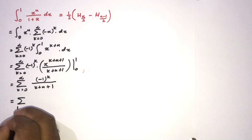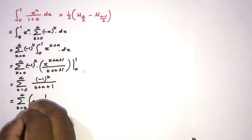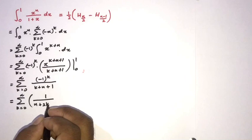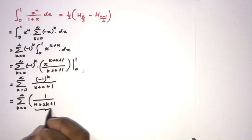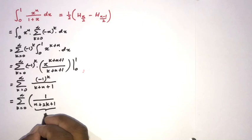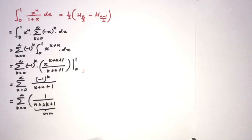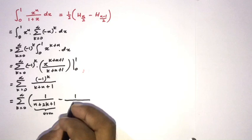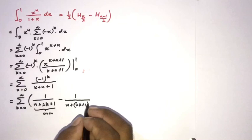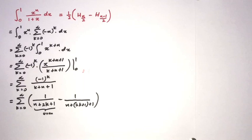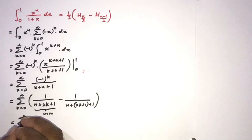Now I will rearrange this series. For k from 0 to infinity, I take 1 over (n plus 2k) times (n plus 2k plus 1). For even values of k, I write 1 over (n plus 2k plus 1), and for odd values of k, I write 1 over (n plus 2k plus 1 plus 1).